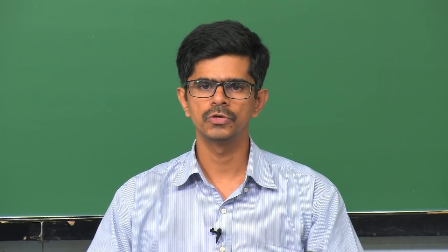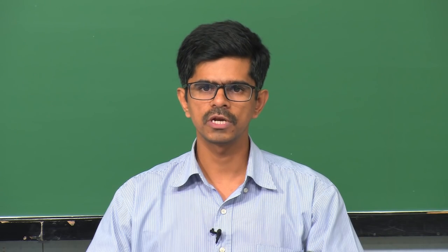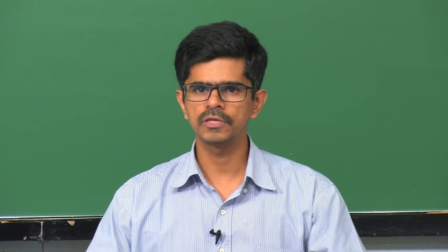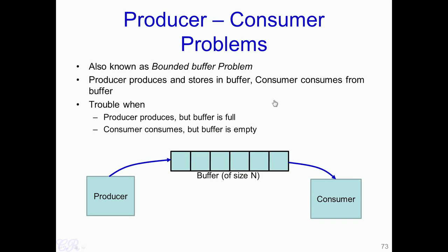Hello. In this video we will look at another synchronization primitive known as semaphores. We would start with a motivating example and then show the application of semaphores. We start with a very popular example known as the producer-consumer problem, also known as the bounded buffer problem. Essentially we have two processes: one known as the producer and the other known as the consumer.